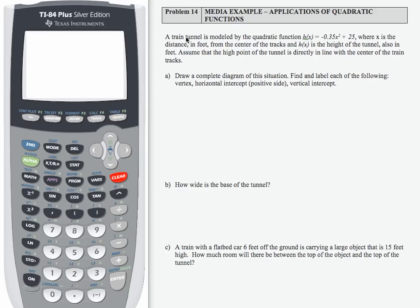In this example, we're working with a train tunnel modeled by a quadratic function. X is the distance in feet from the center of the tracks. H of X is the height of the tunnel. So let's see how that's going to work with the questions down below.